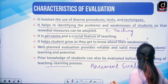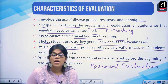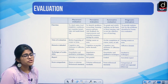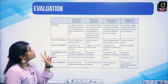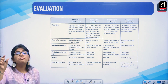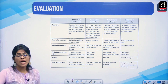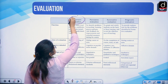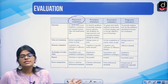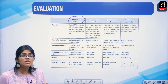Prior knowledge of students can be evaluated before the beginning of the teaching-learning process. This is called placement evaluation. For example, if I want to see whether you are capable of starting an MBA course, I will ask you to give your CAT entrance exam — that is a placement evaluation. It checks whether the prior knowledge needed for the course is available in the child's mind.